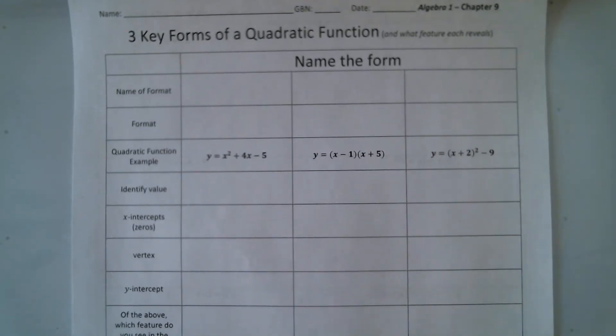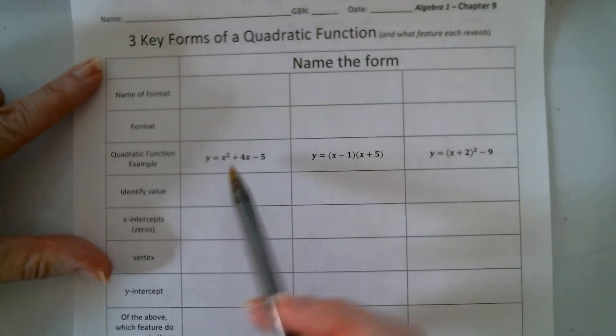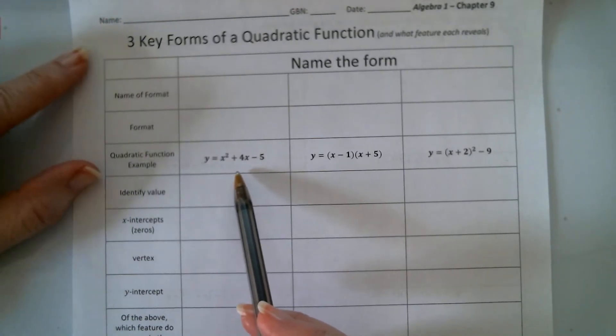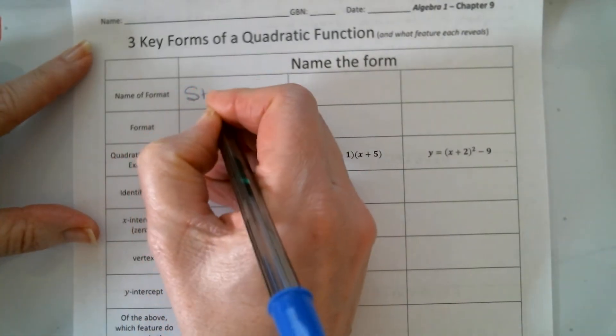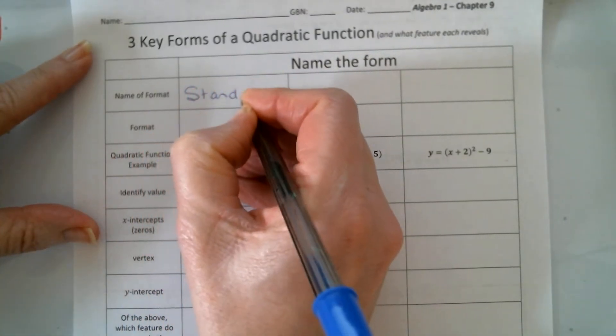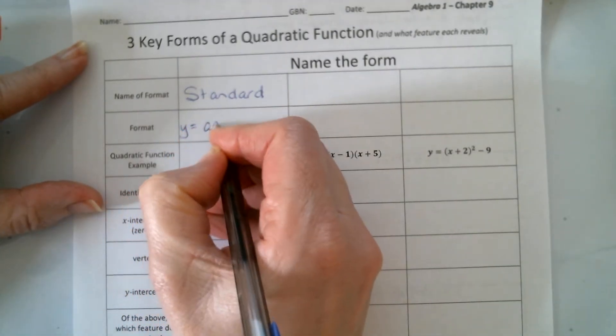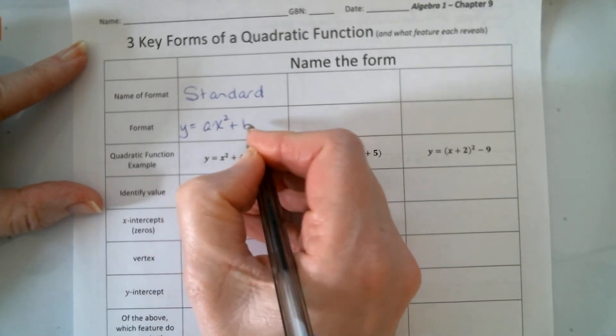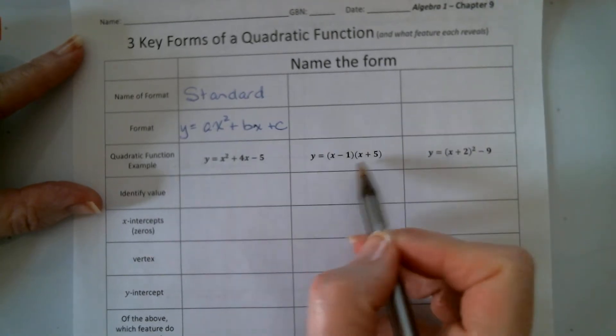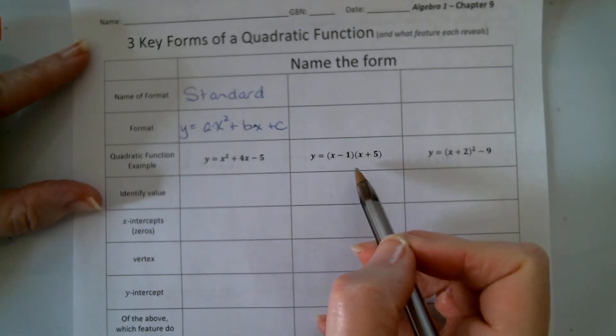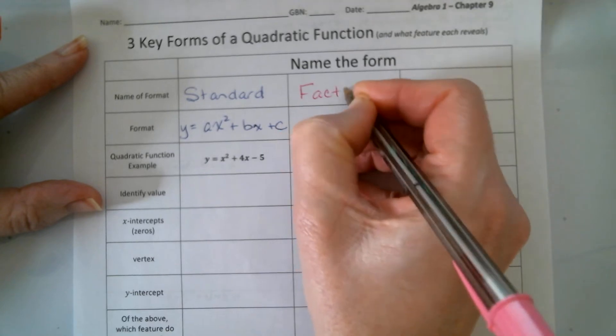Okay, so to start with, I've got these examples down here. I want us to go up here and name them. So when we look at this format, hopefully we know the name of that format is standard. And the format for standard is y equals ax squared plus bx plus c. Now, if we look over here to the middle example, that is in factored form.